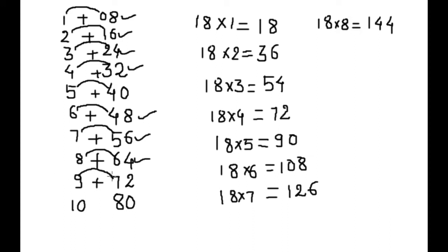8 plus 6 equals 14, and this 4. 9 plus 7 and this 2, 2 from here. And 10 plus 8 equals 18, and 0. Here is your 18 times table completed.